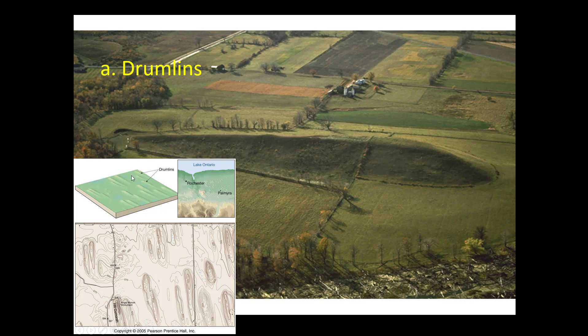Drumlins very often occur in what are called drumlin fields. There are world-famous drumlin fields between Rochester and Palmyra, New York. On a topographic map you can see a series of elongated narrow hills, and the steeper part of these hills is to the north because the contour lines are closer together there. In this particular map the ice moved pretty much due north to south. This is Hill Cumorah, which is the tallest drumlin in the state, and Palmyra is also the birthplace of the Mormon church. So the steep side of the hill indicates the direction the ice was coming from.